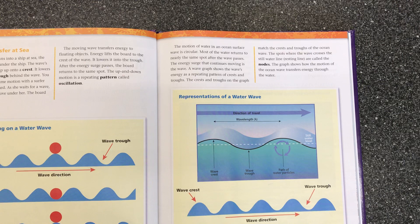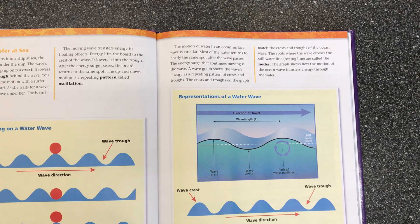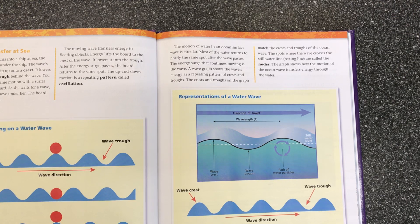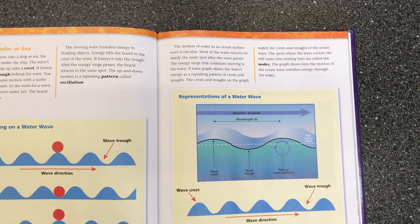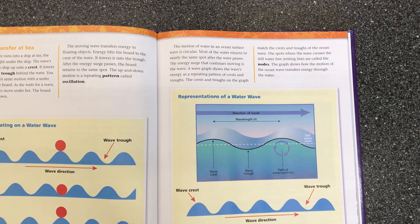The motion of water in an ocean surface wave is circular. Most of the water returns to nearly the same spot after the wave passes. The energy surge that continues moving is the wave. A wave graph shows the wave's energy as a repeating pattern of crests and troughs. The crests and troughs on the graph match the crests and troughs of the ocean wave. The spots where the wave crosses the still water line, or resting line, are called nodes. The graph shows how the motion of the ocean wave transfers energy through the water.